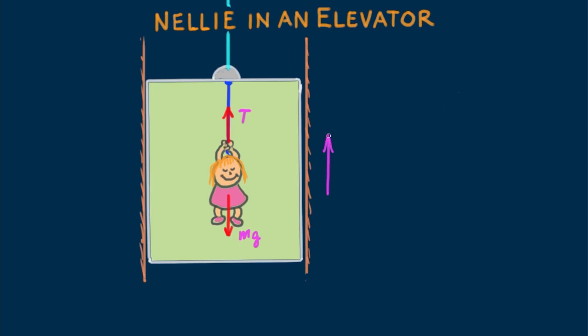Suppose the elevator accelerates upward, say, with an acceleration a. How would the tension on Nellie's supporting rope compare with her weight mg? I think you can sense it will be greater, but how much greater?